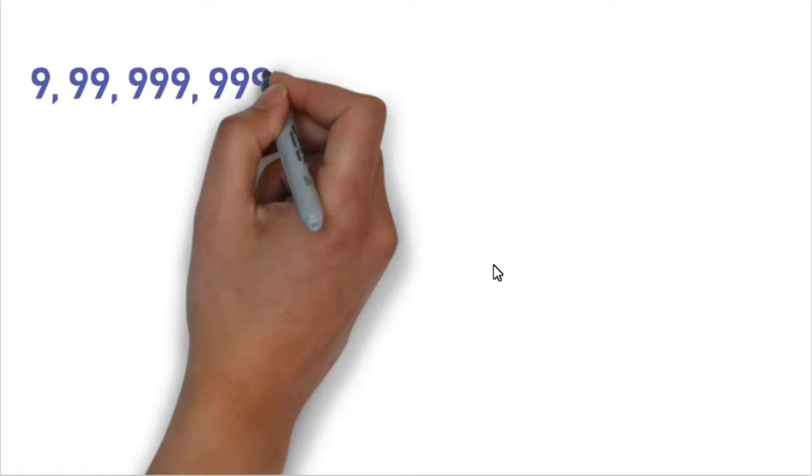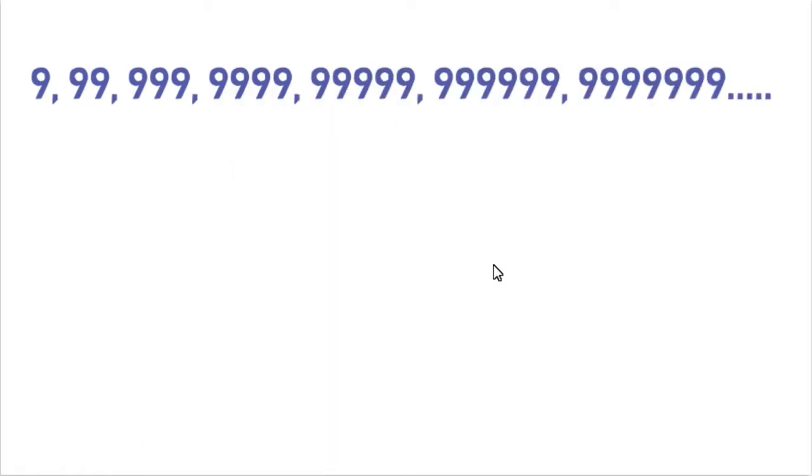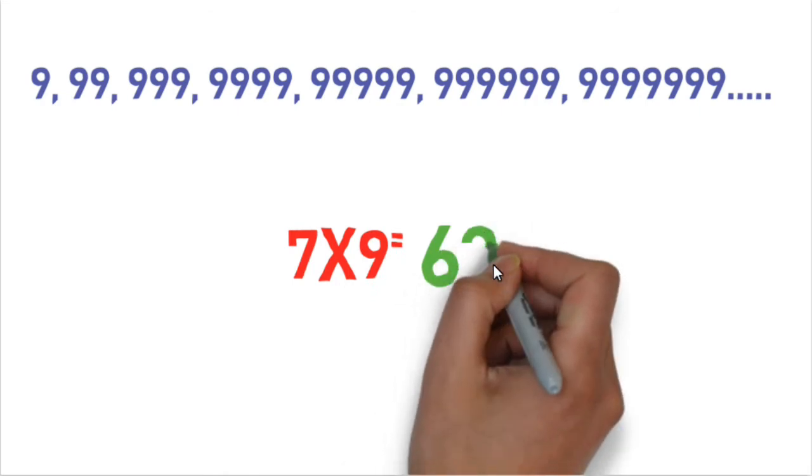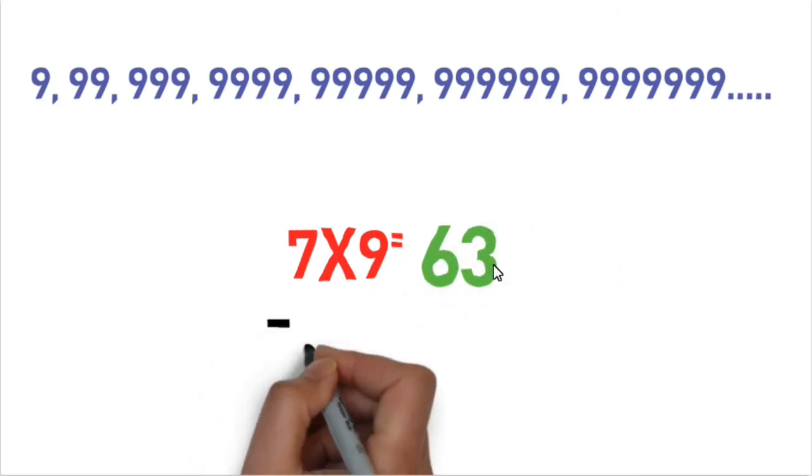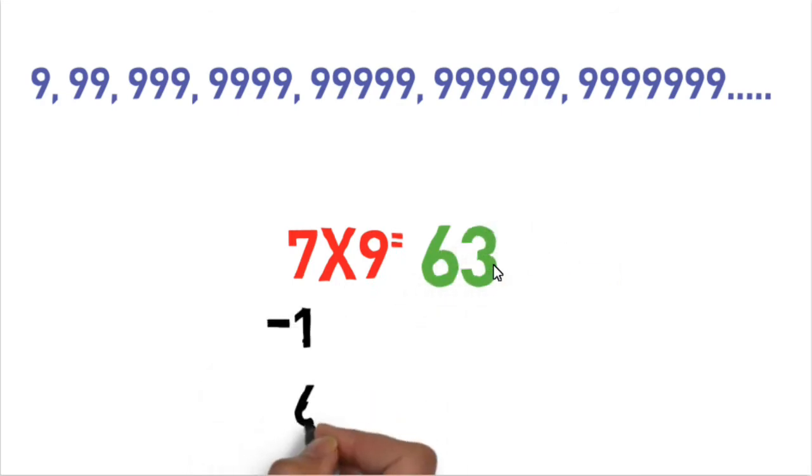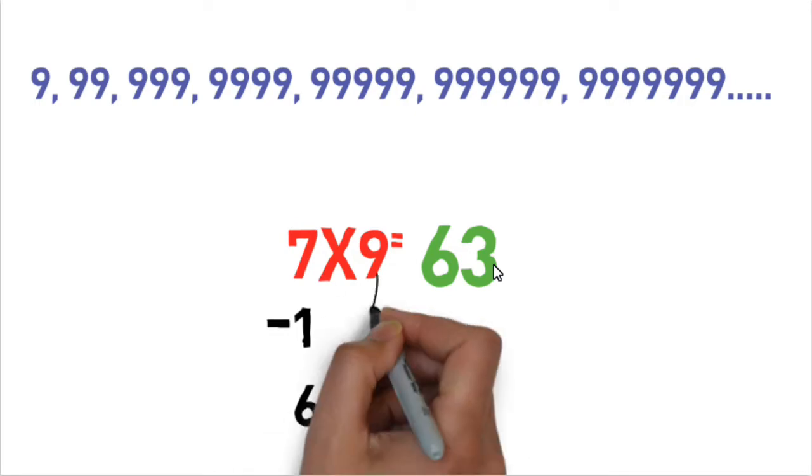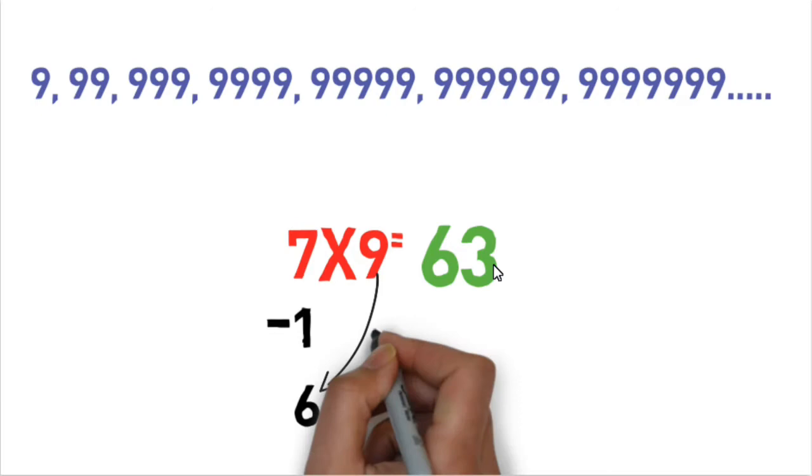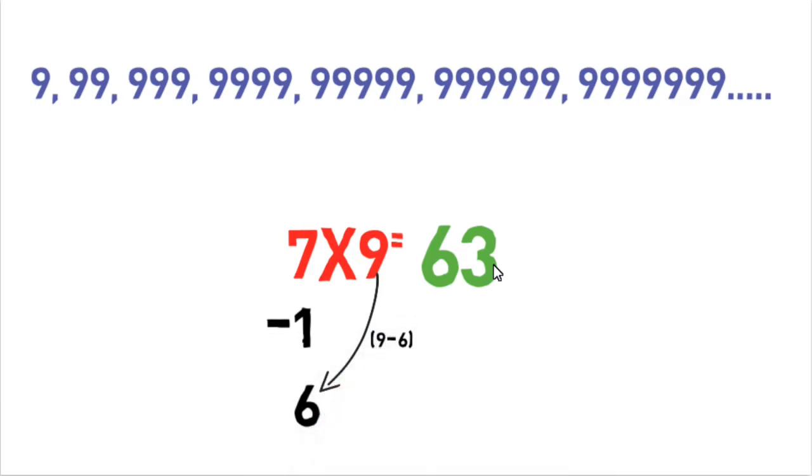Hello friends, let's see today how we can multiply in seconds with the nine series: 9, 99, 999, triple 9, and so on. We'll take the example, let's say we multiply 7 by 9. So we all know the answer is 63, but with my method we'll subtract 1 from 7 and then we'll subtract 9. We'll subtract 6 from 9, so that is 63.